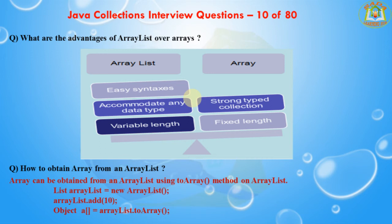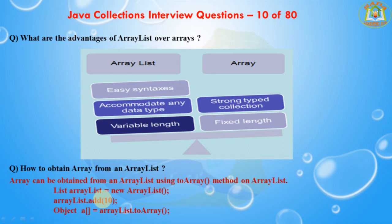The next question: How do you obtain an Array from an ArrayList? An array can be obtained from an ArrayList using the toArray() method. For example: List arrayList = new ArrayList(); arrayList.add(10); then convert using arrayList.toArray(), which returns an Object array.